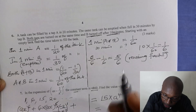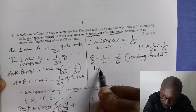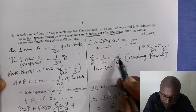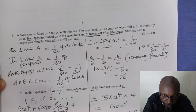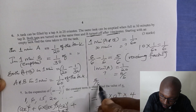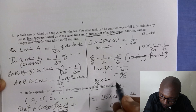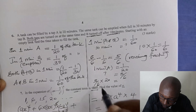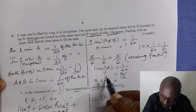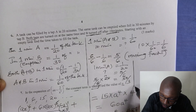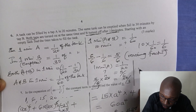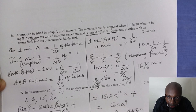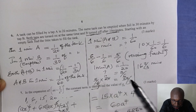Since A is the one left running, and in one minute A fills 1 over 20 of the tank, we need to find how many minutes A will require to fill the remaining 5 divided by 6 of the tank. We cross multiply: 5 divided by 6 multiplied by 20 gives 50 divided by 3, which equals 16 and 2 thirds minutes. That is the time taken by A to fill the remaining part of the tank.